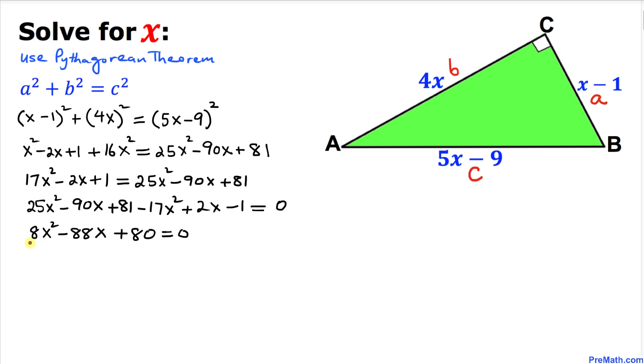We can see that this equation is divisible by 8 across the board. Let me divide it by 8 to make our job a lot easier. That is going to give us x squared minus 11x plus 10 equals 0.